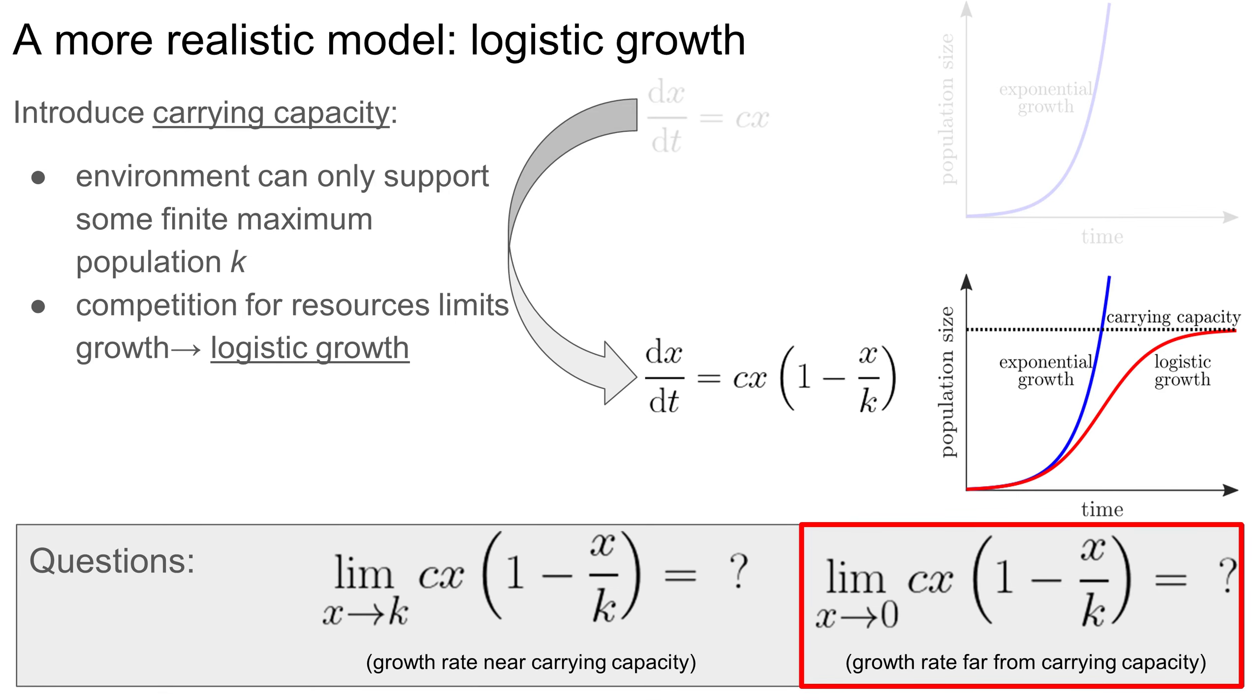Second, what does the population growth look like at really low populations, far away from the carrying capacity? Well, in this limit, the term inside the parentheses is close to 1, so the growth looks exponential when the population is much smaller than the carrying capacity. Again, you can play around with this code on GitHub if you want to experiment further.